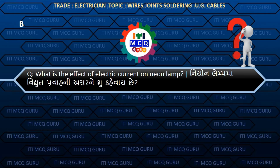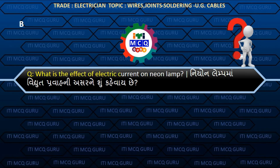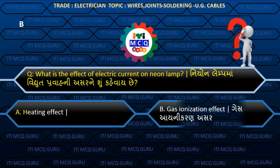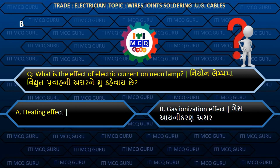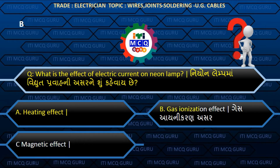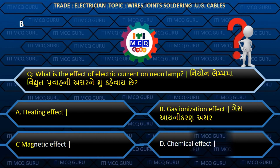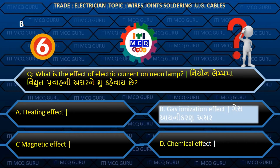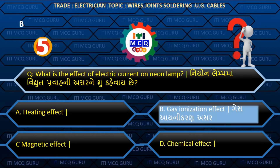What is the effect of electric current on a neon lamp? (Neon lamp maa vidhudh prawah ni asar shun thay chhe?) Answer B: Gas ionization effect.